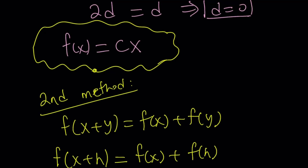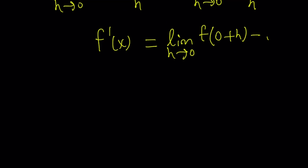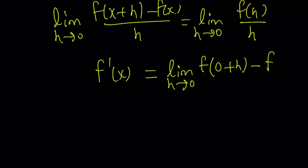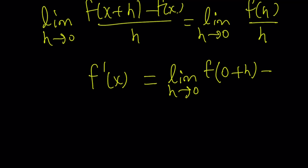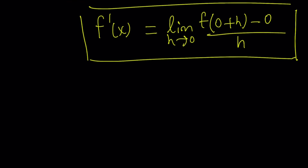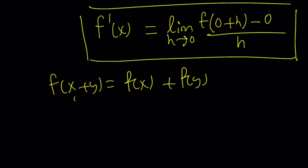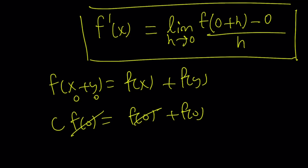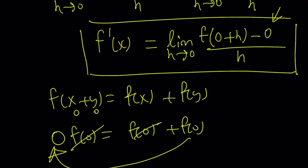Here's something important: we know that f of zero equals zero. How do we know that? If you replace x and y both with zero in the functional equation, you get f of zero equals f of zero plus f of zero, which is 2 times f of zero. Canceling one f of zero gives f of zero equals zero. So we're going to replace zero in the limit expression with f of zero.